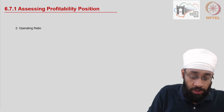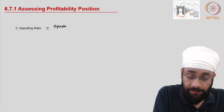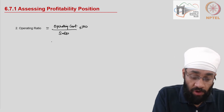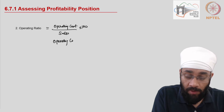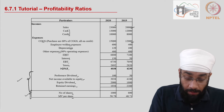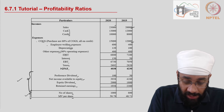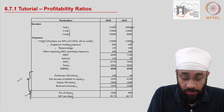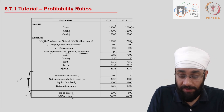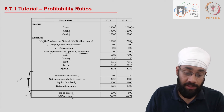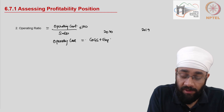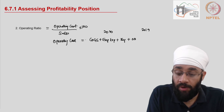The Operating Ratio equals Operating Cost divided by Sales, multiplied by 100. We need to figure out operating cost for both years. Operating cost includes Cost of Goods Sold, employee welfare expenses, depreciation, and other operating expenses. The problem states that 80% of other expenses are operating expenses, so we discard 20% of those figures (400 each year).